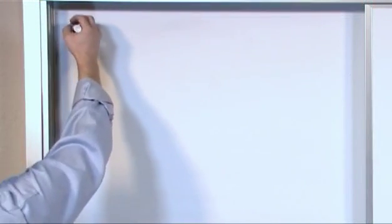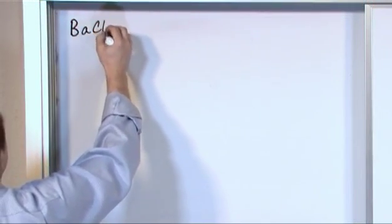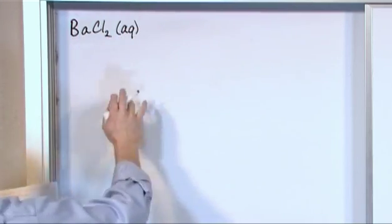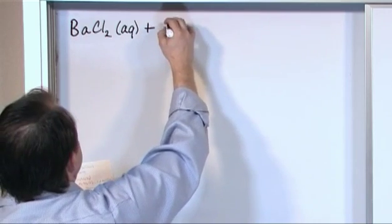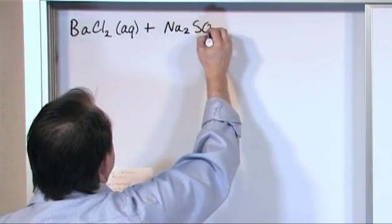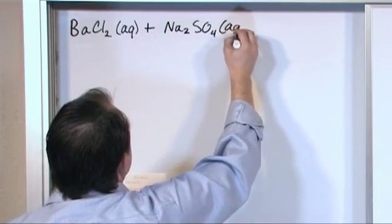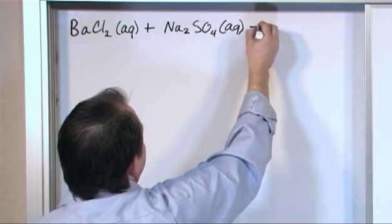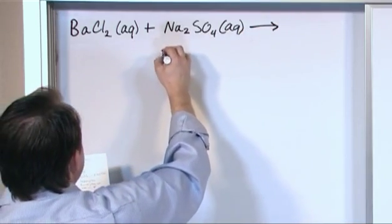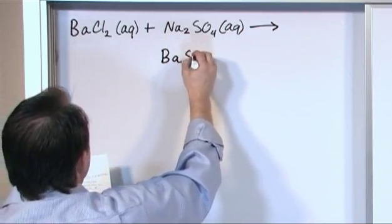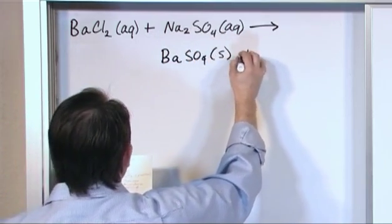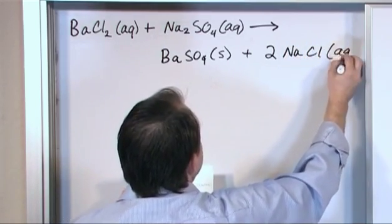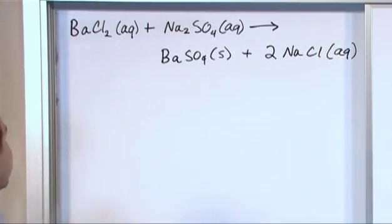So for our reaction today we're going to have barium chloride, BaCl2, of course that's an aqueous solution so we'll put that in parentheses, plus Na2SO4, that's an aqueous solution. Now I don't have enough room to write everything here so I'm going to put the arrow and I'm going to continue writing underneath, BaSO4, this is a solid, plus 2 NaCl aqueous solution. All right, so here's our chemical reaction that we're dealing with, we have barium chloride.